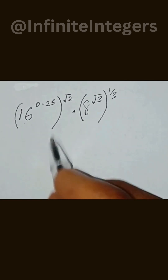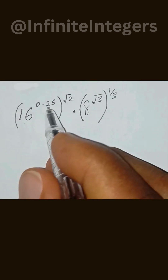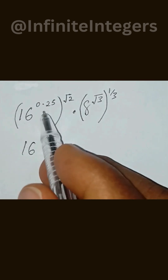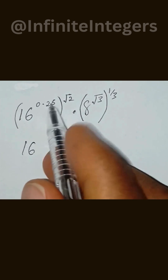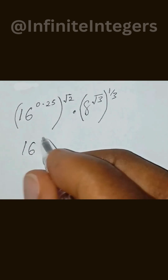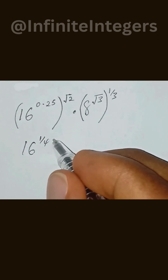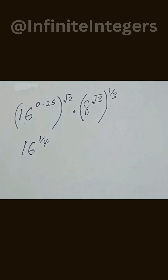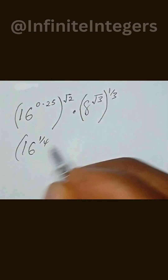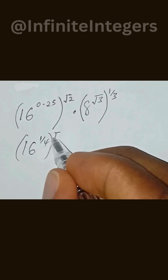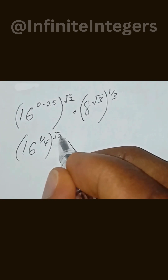Let's start and evaluate this expression. So we have here 16, and we convert this to a fraction, which gives us 1 over 4. And that is equal to — into brackets — to the power of square root 2.